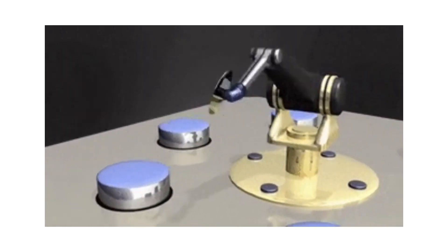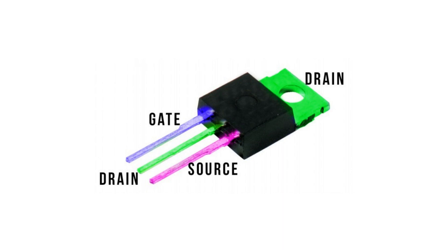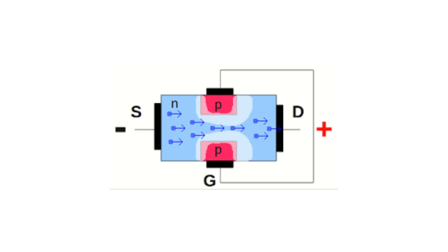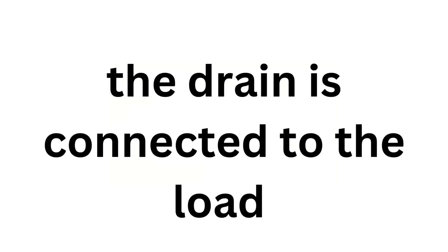MOSFETs have three pins: source, drain, and gate. The source is connected to ground, or the positive voltage in a P-channel MOSFET. The drain is connected to the load, and the gate is connected to a GPIO pin on the Esprano.